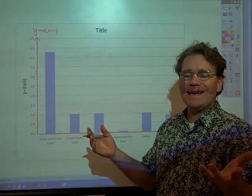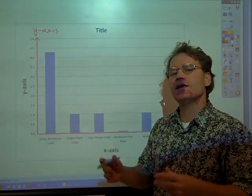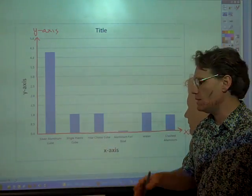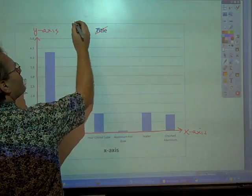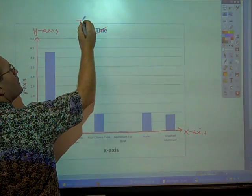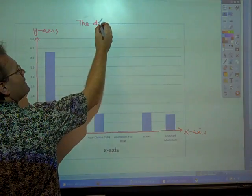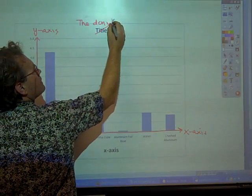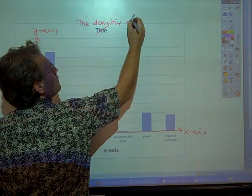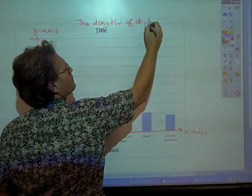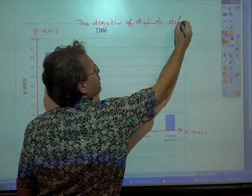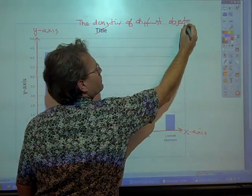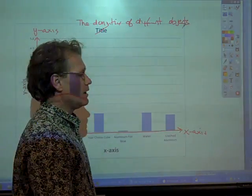Now we need to give it a title and the title is simply what is being compared in the graph. And in this case it's the different objects to their densities. So instead of title, the densities of different objects.